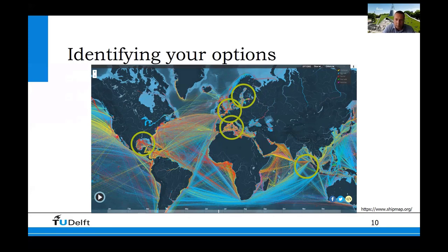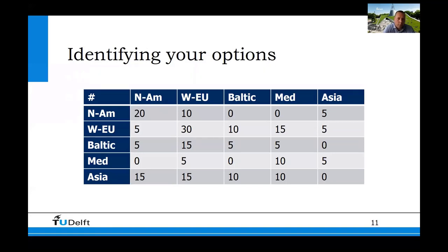In this example, I've selected five busy regions: North America, Western Europe, the Baltic, Mediterranean, and Asia. I've counted the number of contracts from each area to others — including internal contracts within an area, so the diagonal is not empty. Notice there's quite some internal traffic for North America and Western Europe. Also, going away from Asia there are many contracts, but going back to Asia there are not that many — a large trade imbalance. If you start in Asia, you have good chances of getting a contract, but getting one back to Asia may be more difficult and you might have to sail empty.